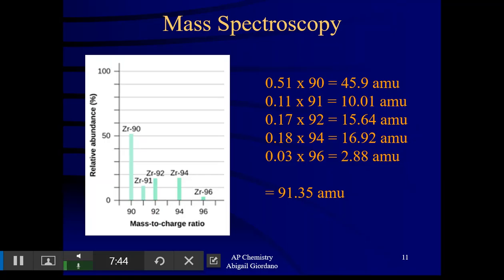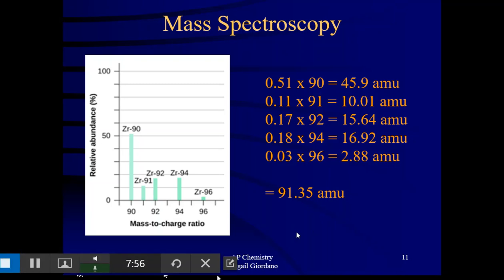So again, if I didn't know what element it was, I can calculate it and compare it to the periodic table. Another question that sometimes is asked on the AP exam with graphs like these. Again, they probably wouldn't tell you what element it was. It would simply, maybe in a multiple choice situation or a situation maybe where you don't have your calculator, they might ask you to simply estimate the average atomic mass.